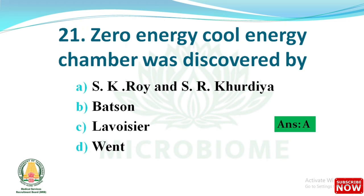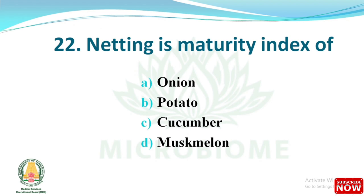Next question: netting is the maturity index of which of the following? The options are onion, potato, cucumber, and musk melon. The right answer is option D: musk melon.